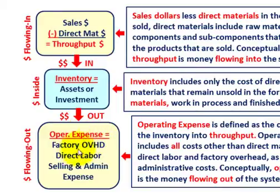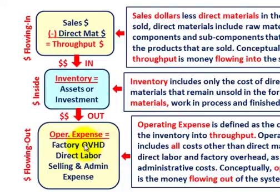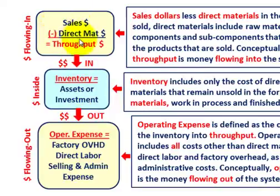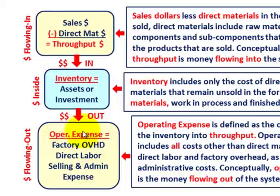What flows out of that inventory or assets account goes into operating expenses — that covers factory overhead, direct labor (variable and fixed), and selling and administrative expenses (variable and fixed). So money is flowing in as throughput dollars into the inventory or investments, and what flows out goes into those operating expenses.